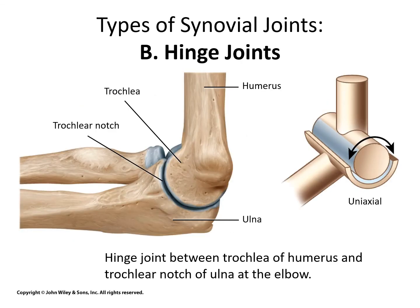A hinge joint is exactly what it sounds like — it allows for movement in one direction, just like the hinge on a door. We say it's uniaxial: motion only occurs along one axis. The elbow is a good example, where the majority of the hinge joint is made by the connection of the humerus to the ulna, although the humerus is also hinging with the radius.